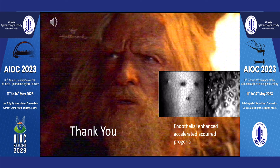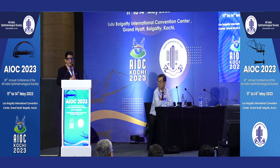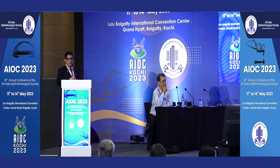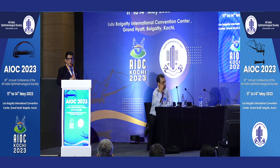A new term has been devised: endothelial enhanced accelerated acquired progeria. Progeria is where even a 14-year-old looks like an 84-year-old. When surgeries are done on 24 or 34-year-olds using a lot of water — thinking the cataract can be aspirated without phaco energy — the endothelial morphology and function reveal that the endothelium has turned very old. That is an acquired progeria for the endothelium, so you really need to be aware of how much volume of water you are using.